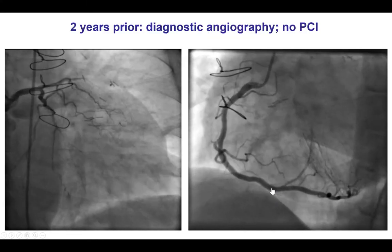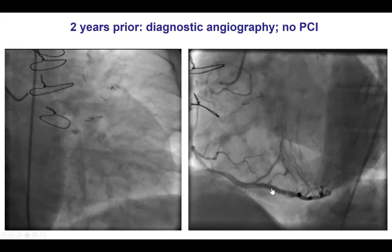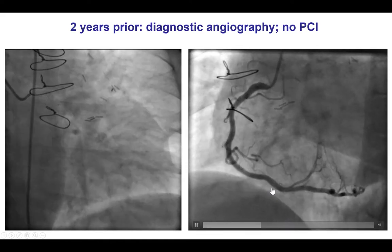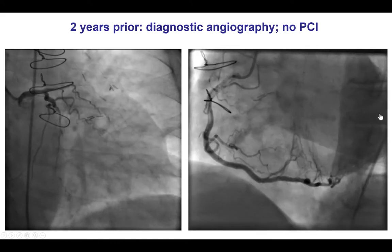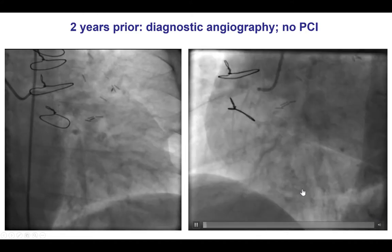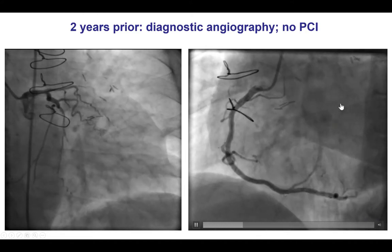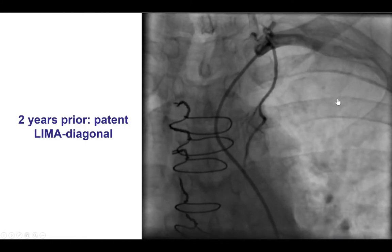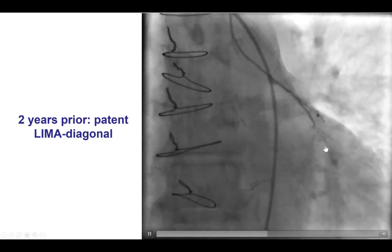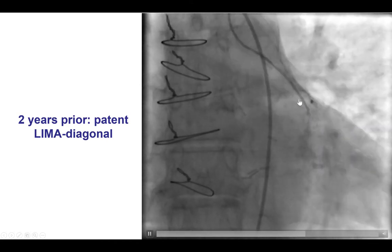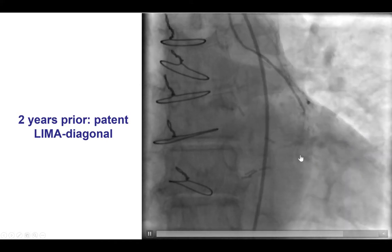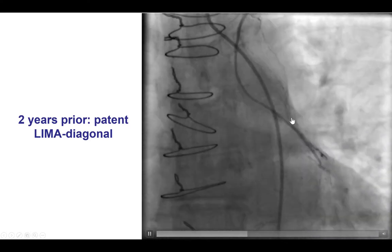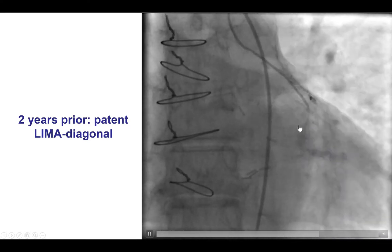Two years prior to the current presentation, he had diagnostic angiography because of angina, but no PCI was done. One can see there are some septal collaterals filling the LAD, and the LIMA seems to supply the diagonal, but we don't see anymore the retrograde filling into the LAD, suggesting some progressive disease into the LAD.